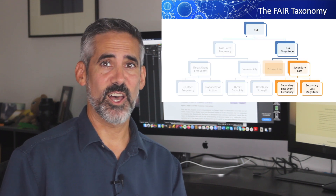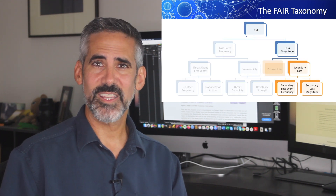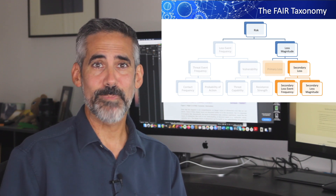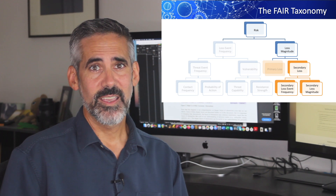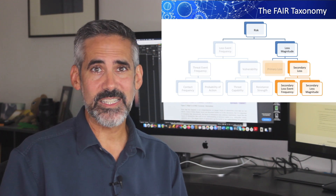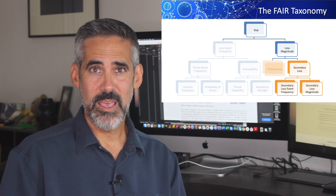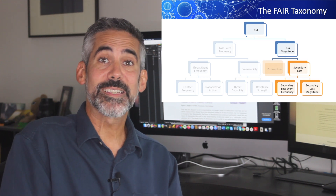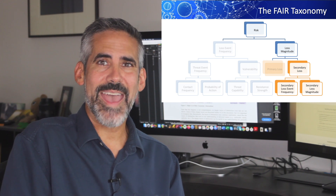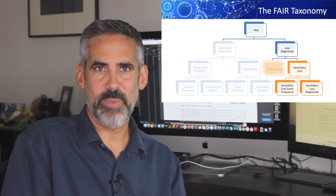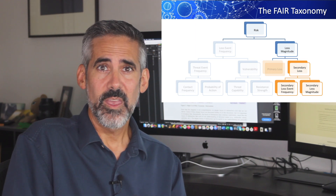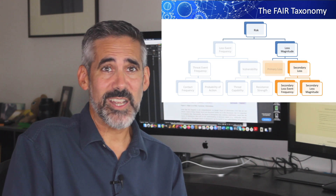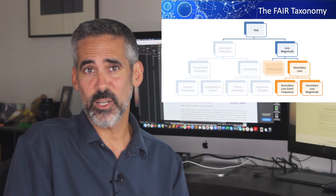Now let's turn our attention to secondary losses. You'll notice first that there's the concept of secondary loss event frequency. Every primary loss may not trigger a secondary loss. An internal ticket tracking system that goes down may have impact on how the business runs, but may have no effect on secondary stakeholders. As you discuss primary loss events with your business leaders, you'll want to ask about any of these secondary impacts and how likely they are to occur. You'll represent this as a percentage — such as 25% of the time we expect this event to impact secondary stakeholders.